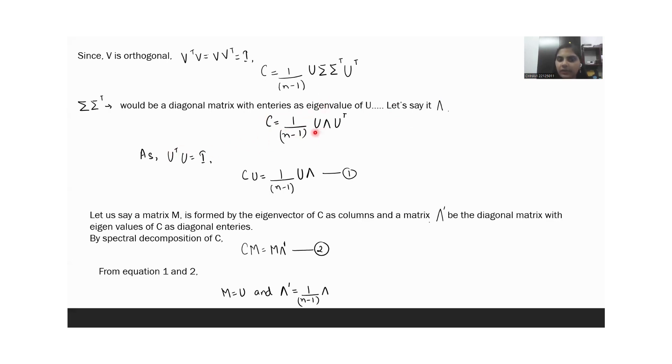As we know U times U transpose would be an identity matrix. Multiplying U on both sides would give us C U equal to 1 by N minus 1 times U lambda. Sorry, it's lambda.